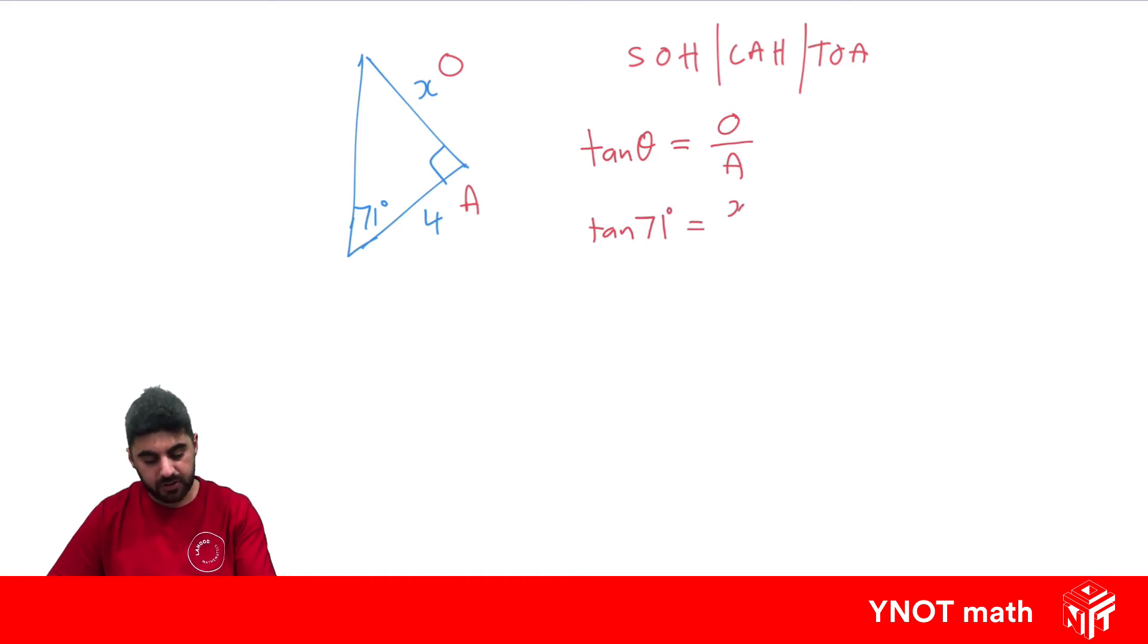That equals the opposite side, which is x, divided by the adjacent side, which is 4. Tan 71 is just a number. So we can multiply both sides by 4, where these 4s will cancel out. And we just have x equals 4 tan 71. Using the calculator, that's going to give us 11.62, correct to 2 decimal places.